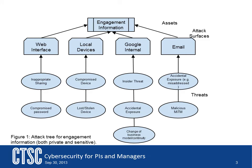One key asset for CTSC is the documentation developed as part of our engagement with various projects. These documents include the risk assessment and security plan for the project that is the partner in the engagement. The result of the risk assessment are not something these projects want getting out to the world. With that asset identified, we can determine the attack surfaces that are available to a threat. These surfaces are points where an unauthorized source can gain entry or access to the system. In the case of the engagement information, the surfaces or points of entry were web interfaces, local devices, Google internals, and email. With these surfaces identified, we were able to then develop threats that could take advantage of the surface.